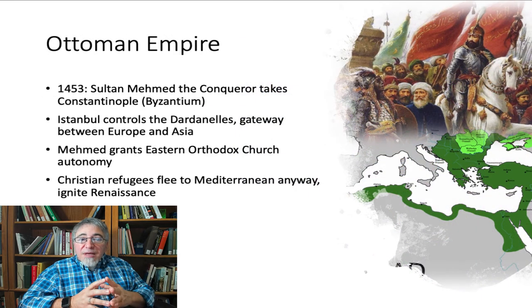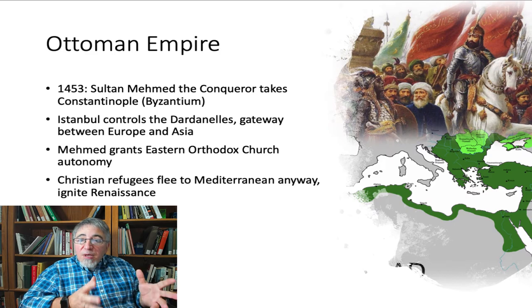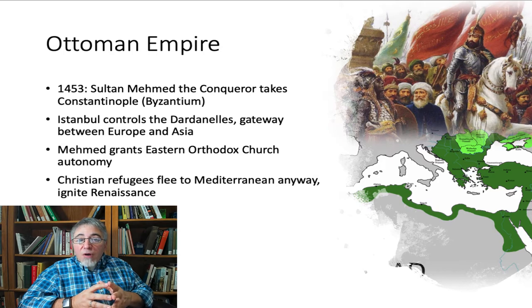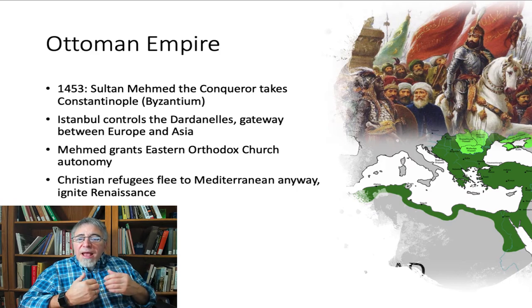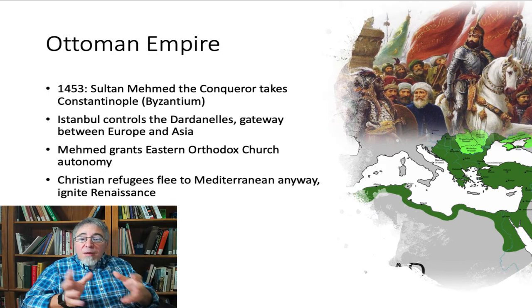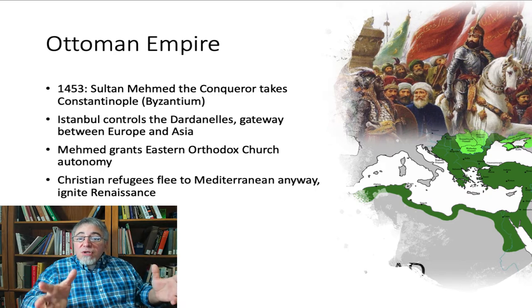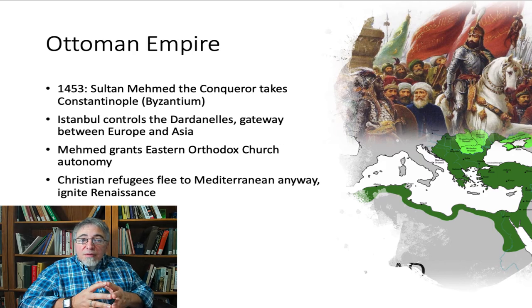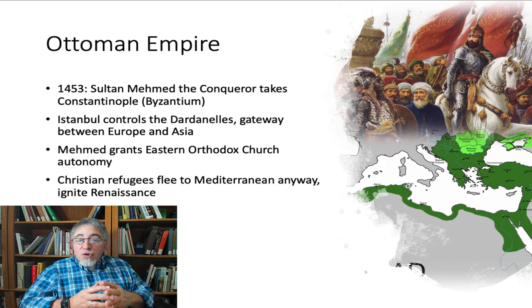The Ottomans were a Muslim dynasty that rose initially on the borders of the Byzantine Empire in the 1300s, becoming a world power when Sultan Mehmed II — subsequently called Mehmed the Conqueror — overwhelmed the defenders of Constantinople in 1453. Constantinople had been the capital of the Eastern Roman Empire since Emperor Constantine moved his government there between 324 and 330 of the Common Era. It was an ancient city strategically important because it controlled the Bosphorus strait, which connects the Mediterranean Sea with the Black Sea, making it the gateway between Europe and Asia — a strategic choke point and very valuable.